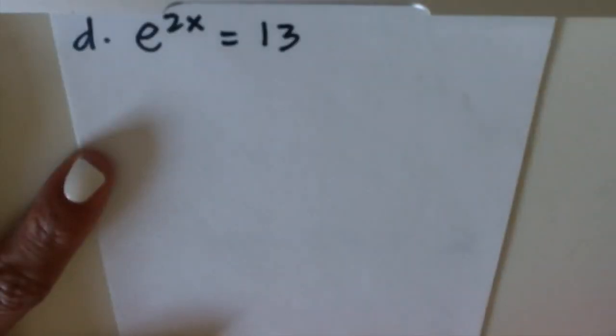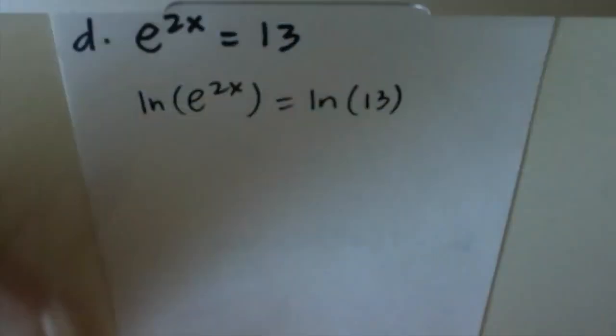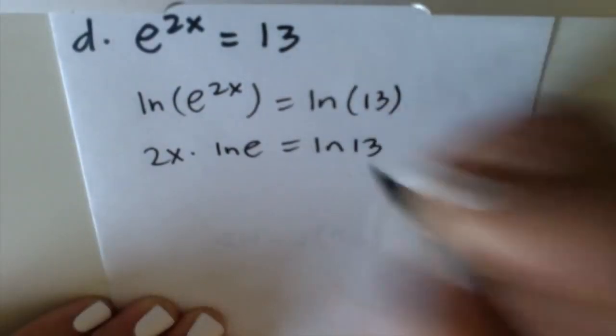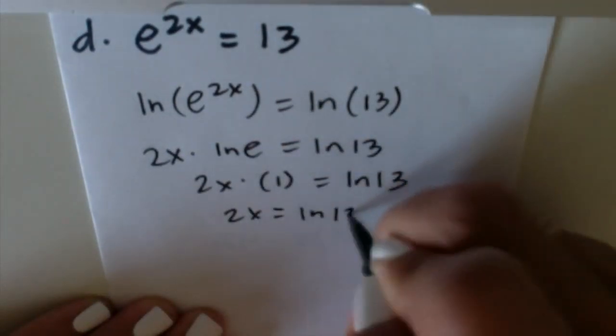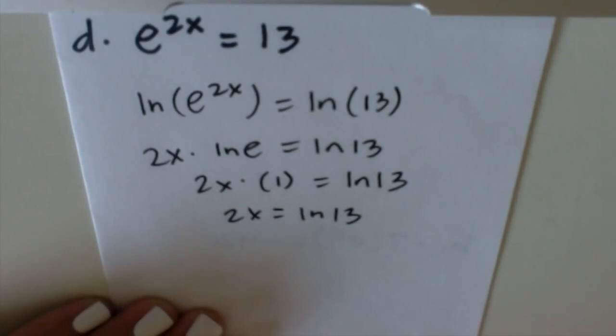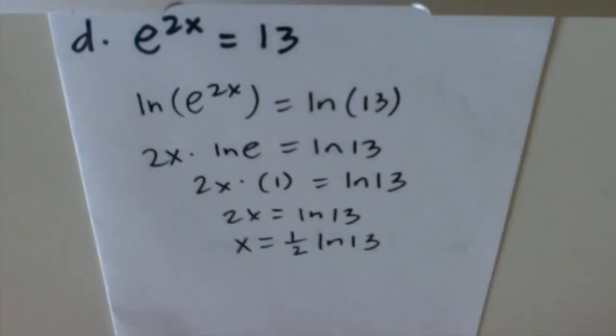This example says e^(2x) = 13. We can move the power to the front. ln(e) = 1. So we're going to divide both sides by 2. So now we have x = 1/2 ln(13).